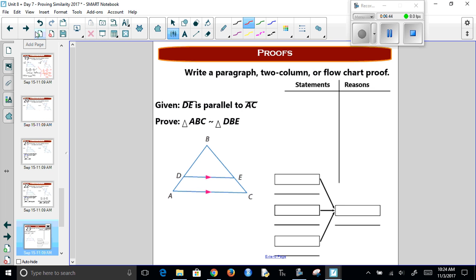Now if we want to write paragraph, two column, flowchart, whatever you want. It doesn't matter, as long as you have a proof. Let's start with this one. We know DE is parallel. I'm just going to use my bars. It's parallel to AC. Reason, given.